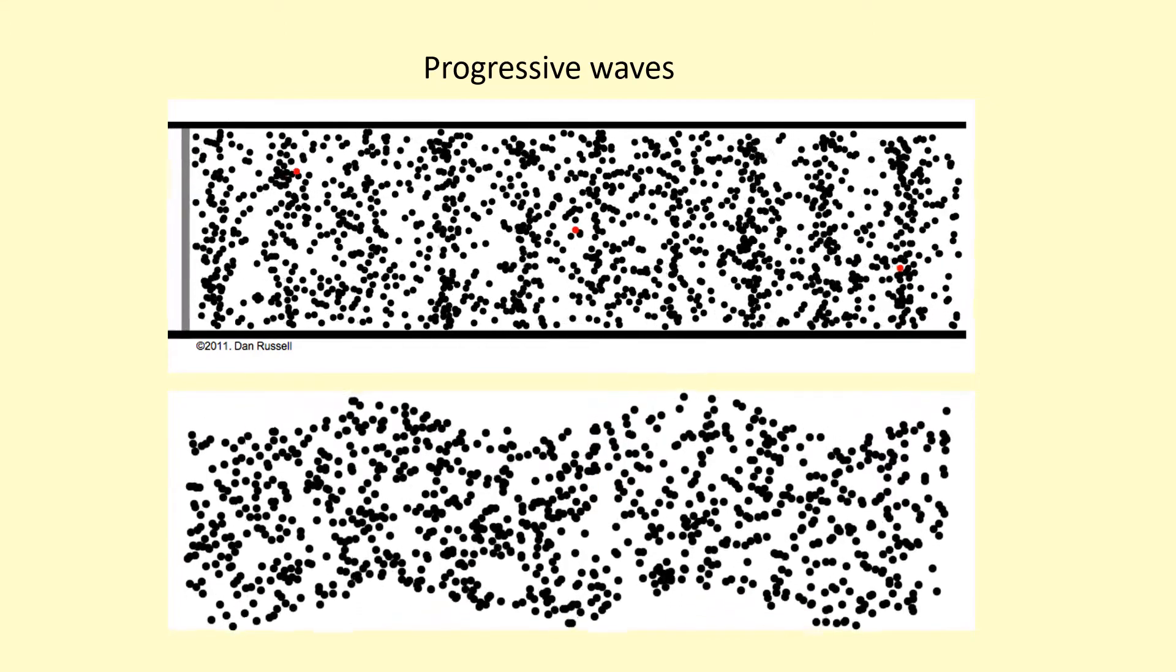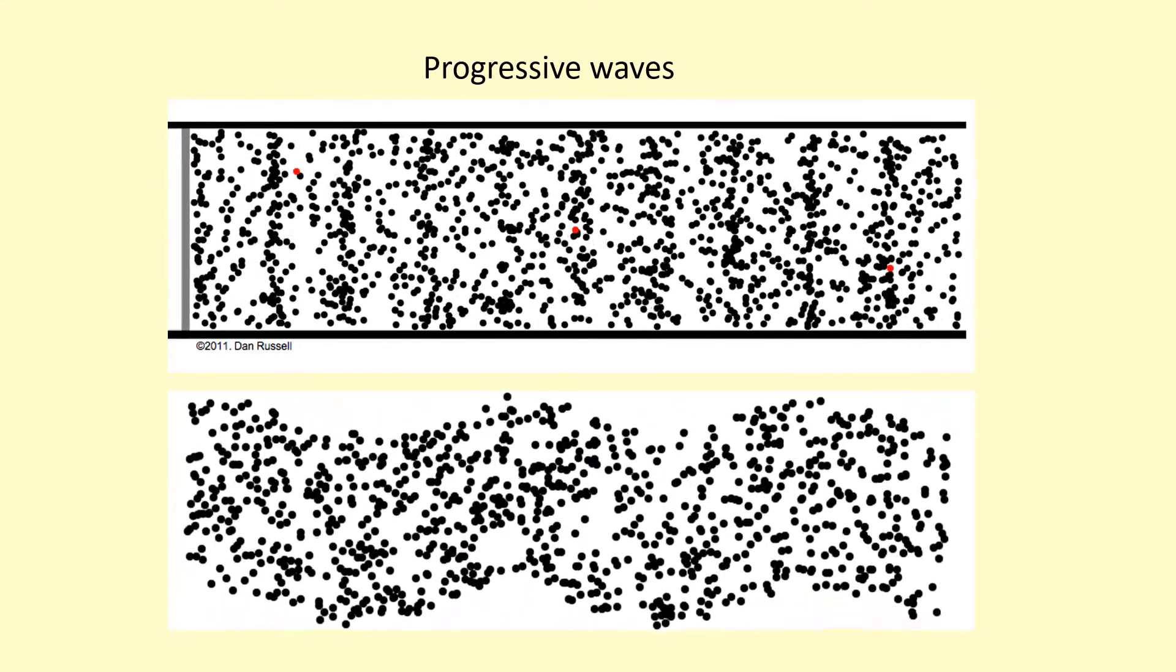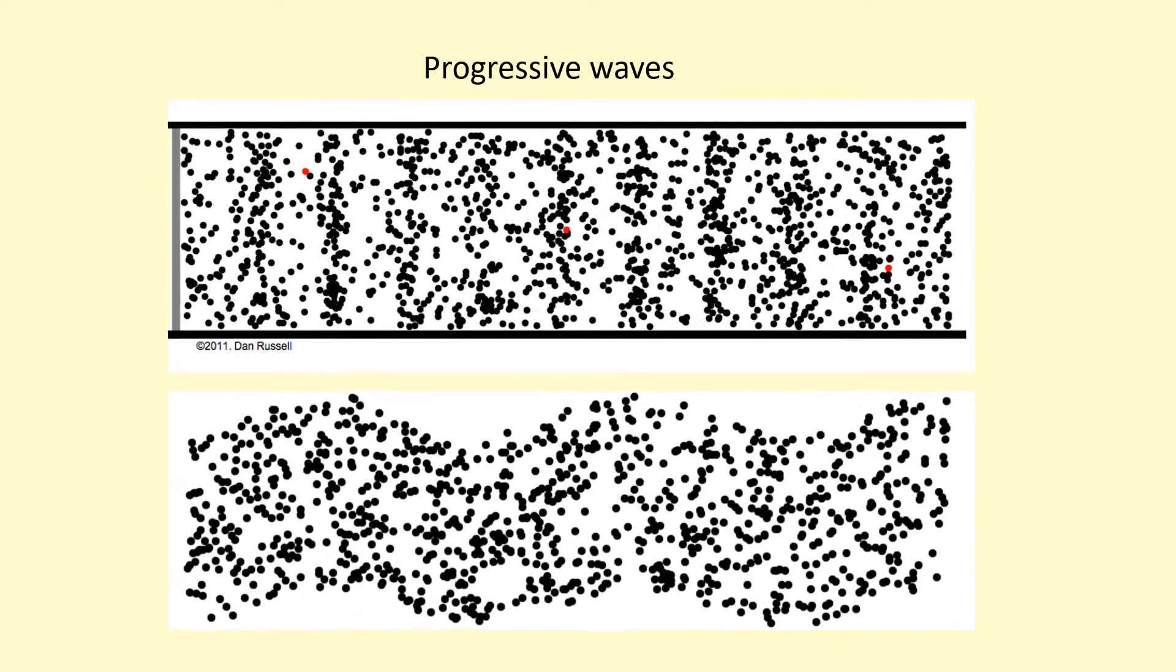Okay, so progressive waves transfer energy from one place to another. There are two types of progressive waves, longitudinal and transverse.